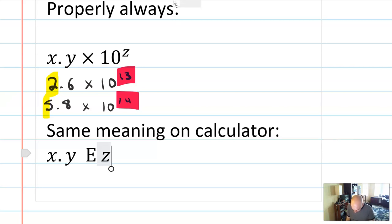What is important, though, is that because we're using these to compare, that x always has to be a single digit, and it shouldn't be zero.